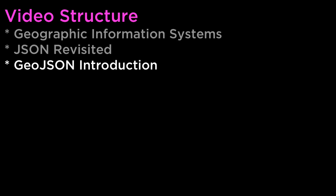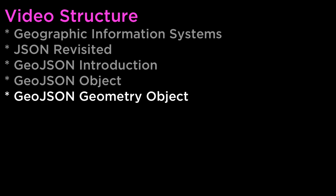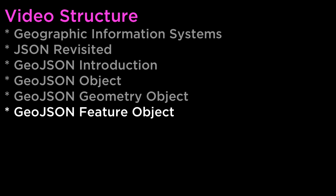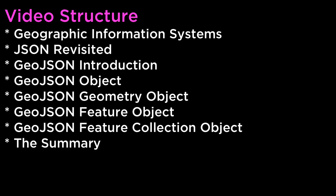This video covers GeoJSON. The structure of this video is as follows: Geographic Information Systems, JSON Revisited, GeoJSON Introduction, GeoJSON Object, GeoJSON Geometry Object, GeoJSON Feature Object, GeoJSON Feature Collection Object, and the Summary. Let's get started.